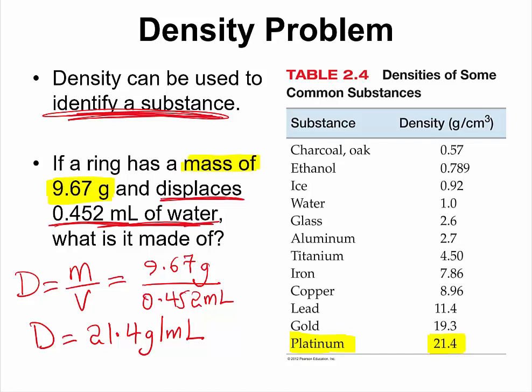This is another question I have been asked several times. Gram per centimeter cubed, is it the same thing as gram per milliliter? Yes, they are the same because one centimeter cubed is equal to one milliliter. That's it. Thank you.